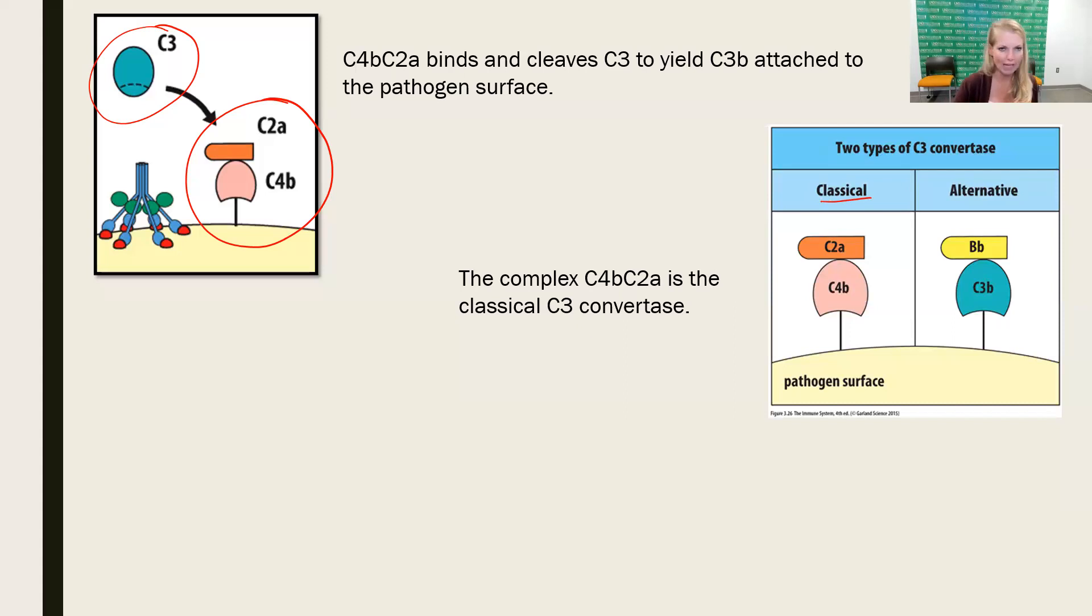You're like, but why isn't it called the lectin pathway? Because we're going to find when we learn the classical pathway, this is the same. In the alternative pathway of complement activation, C3BB was the C3 convertase. And now C4B2A is the C3 convertase of the mannose-binding lectin pathway, and we'll find of the classical pathway.